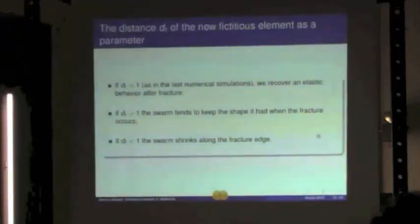While another important parameter we can vary in our system is the distance at which the fictitious boundary takes place once the fracture has occurred inside the model, and this can recover a different behavior.